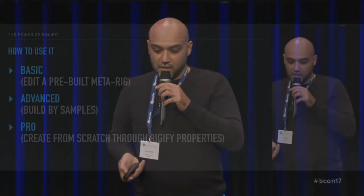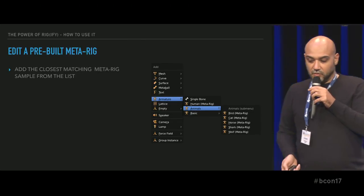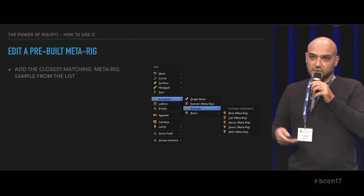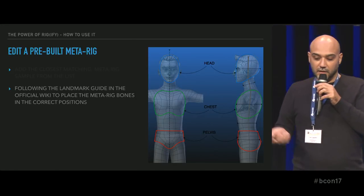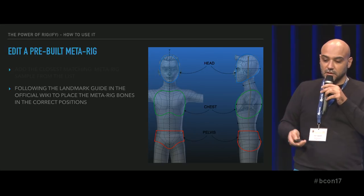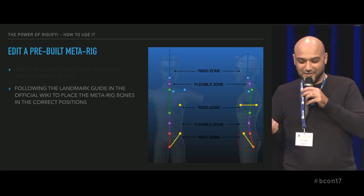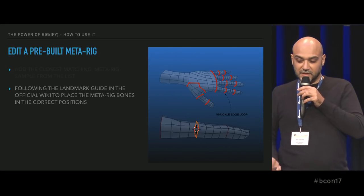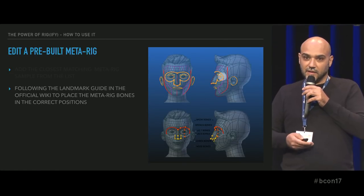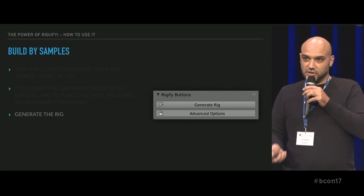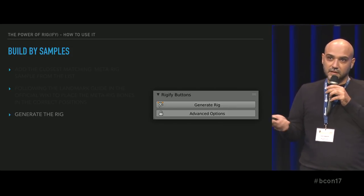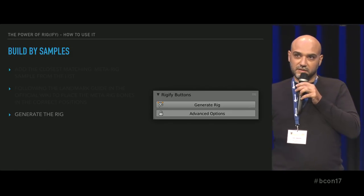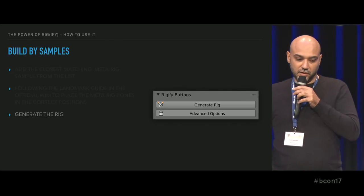The basic method is based on a metarig — a simplified version of the rig the software uses to create all the controls. We added some new metarigs. You start by choosing the nearest one to your model, follow the wiki to see where to place landmarks and where bones should be placed. It's very detailed, at least for humans. Then you click the Generate button and it's done — all the controls are created and you just need automatic binding for the character.